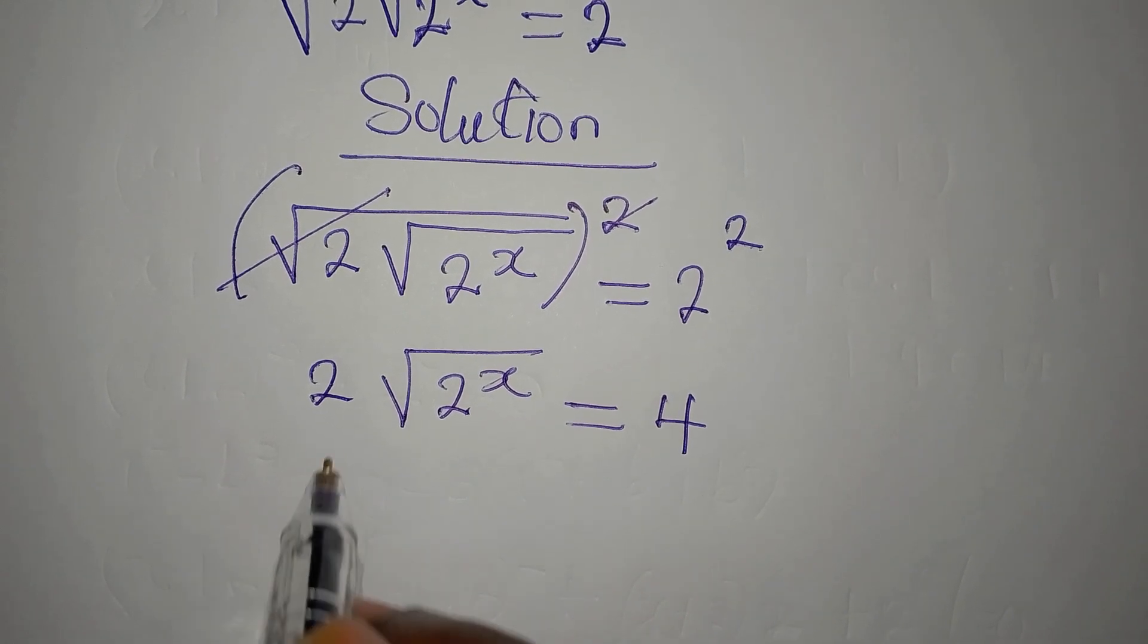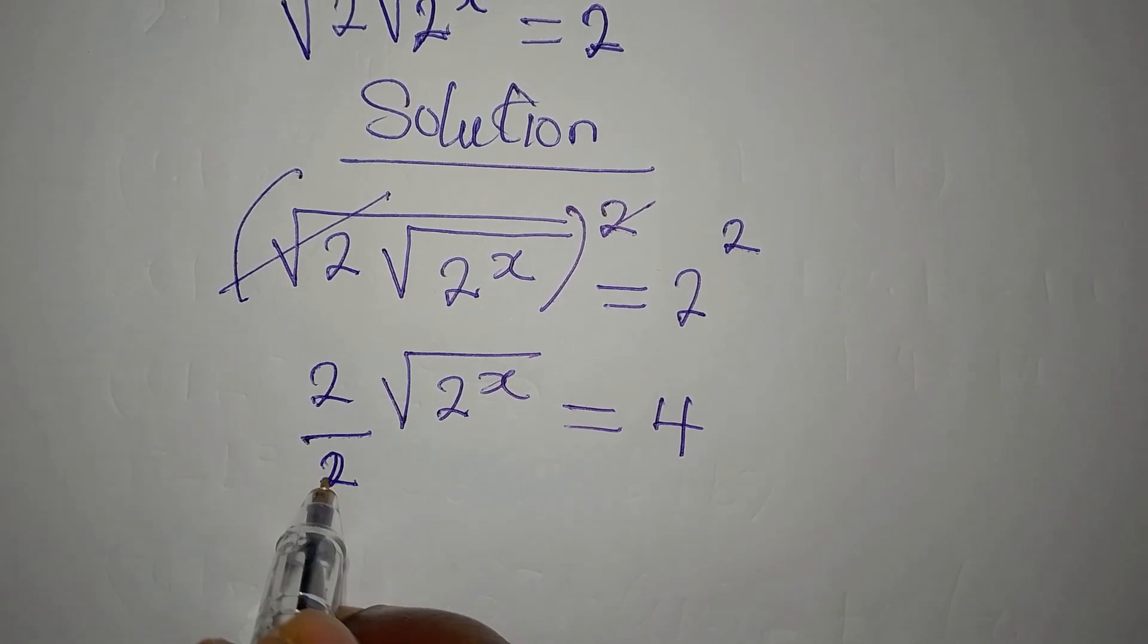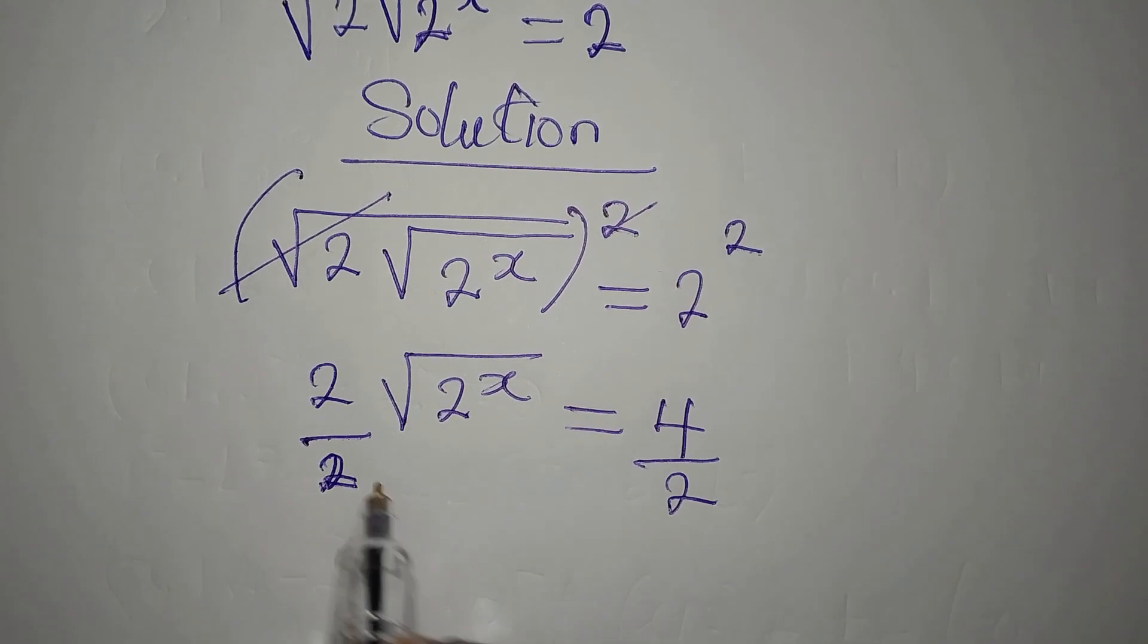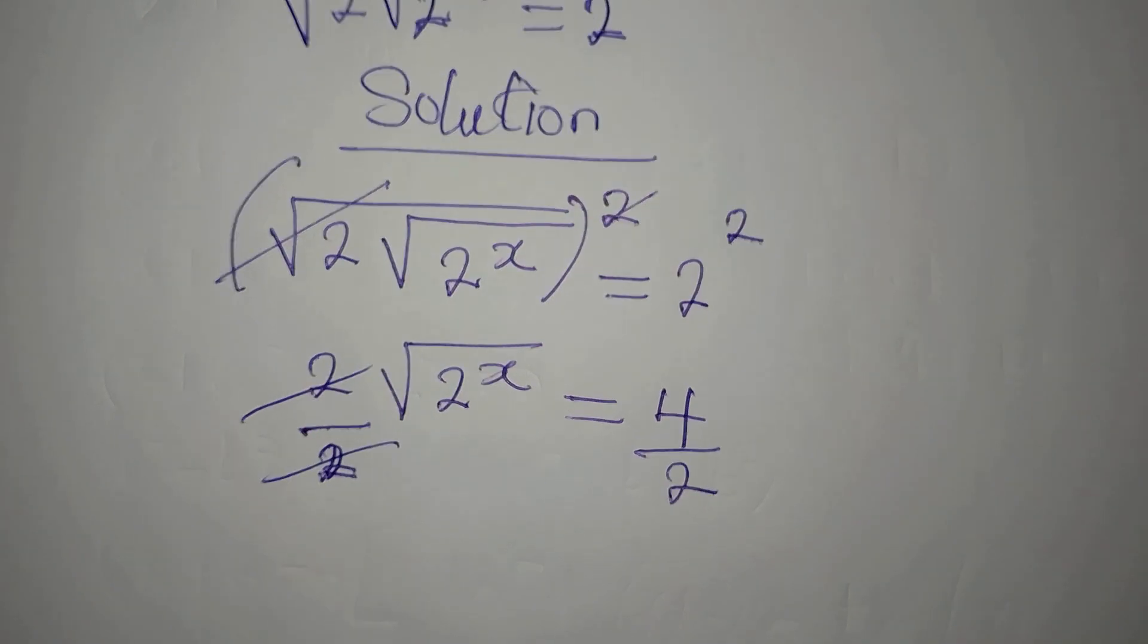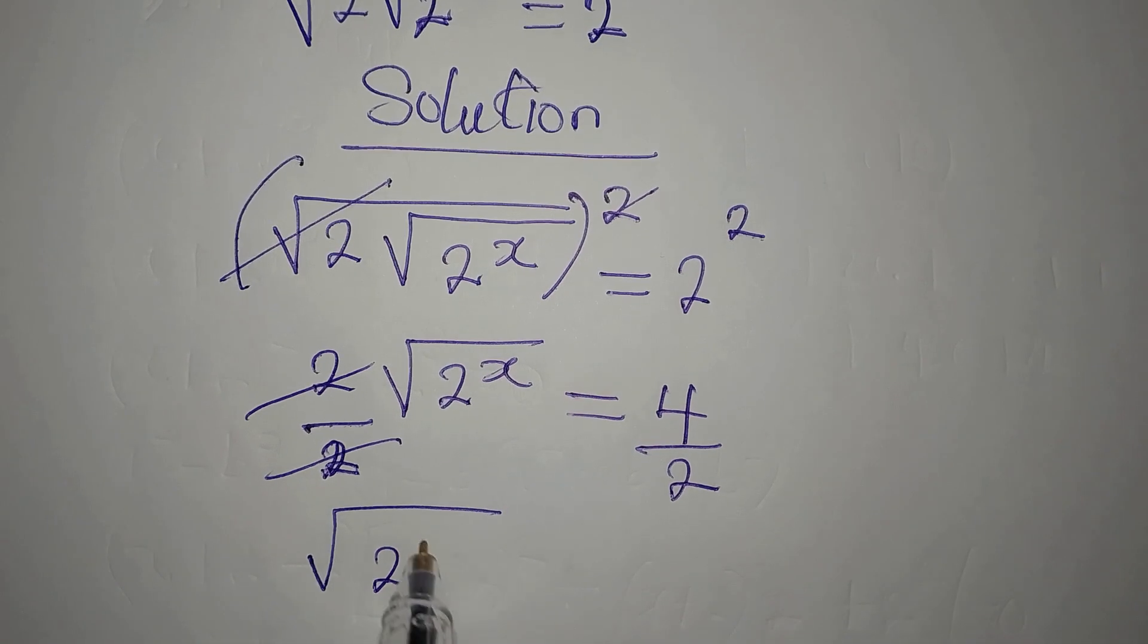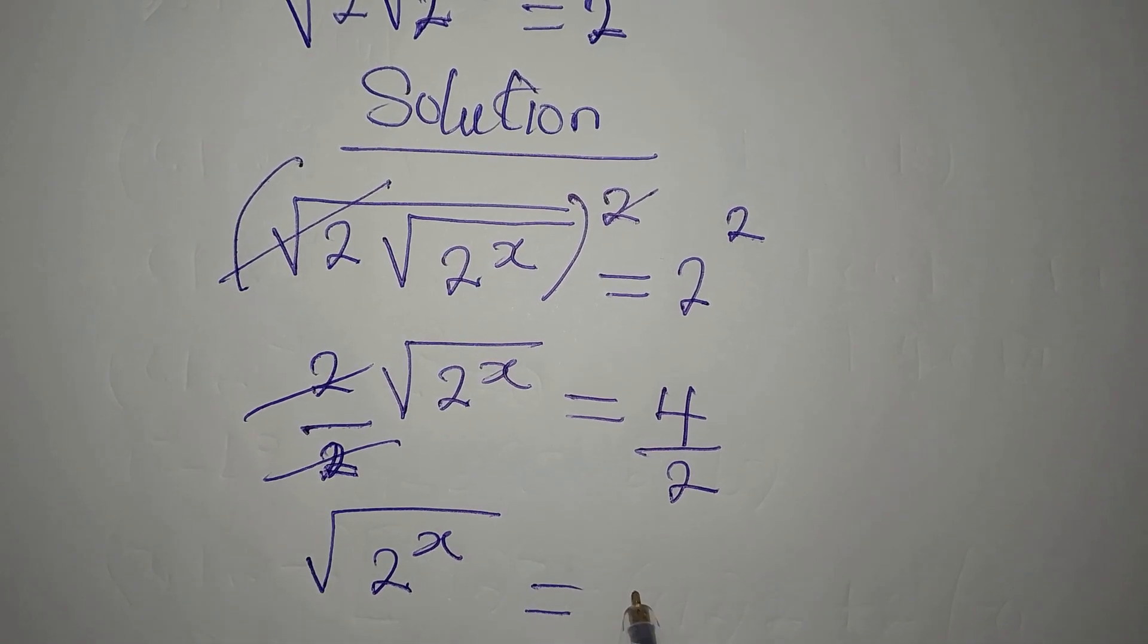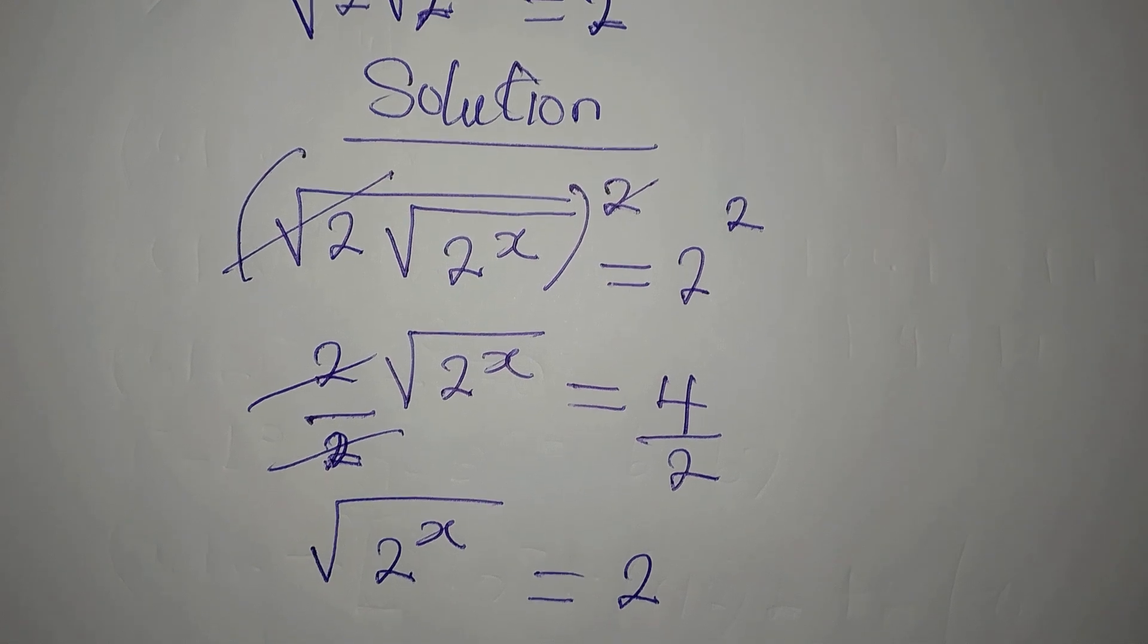Before you do anything, you will have to divide by 2, then divide by 2 so that this will go. And then square root of 2 to the power of x is equal to 2, that is 4 divided by 2.